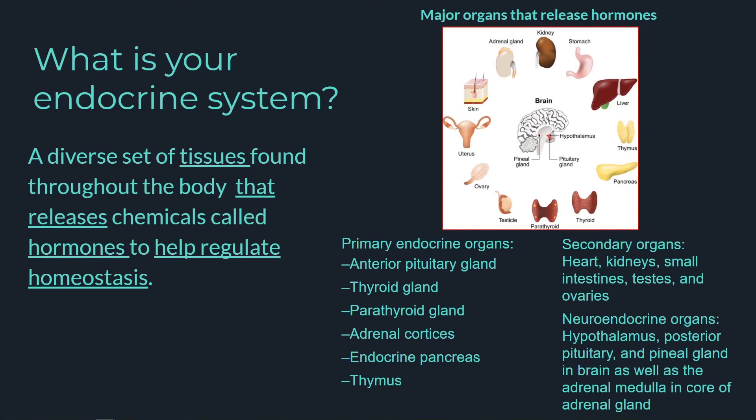First, let me start off by pointing out the awesomeness that the endocrine system has tissues located throughout the body that secrete hormones. Some of these tissues, like the pituitary gland and the thyroid gland, are primary organs whose function is to serve as hormone secretors.